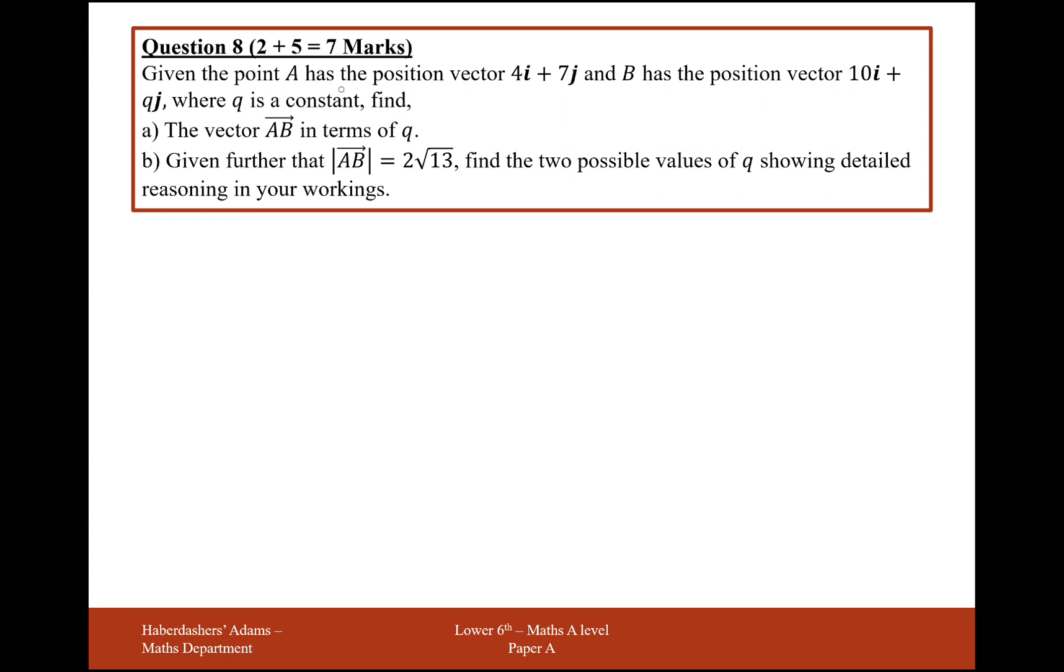So we have two vectors. Point A has the position vector 4i plus 7j, and B has the position vector 10i plus qj, where q is a constant.